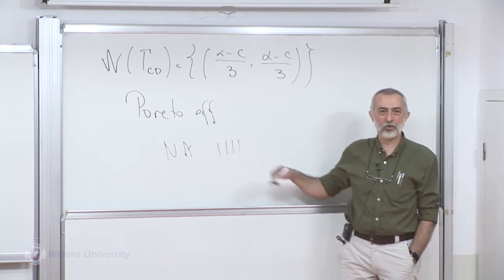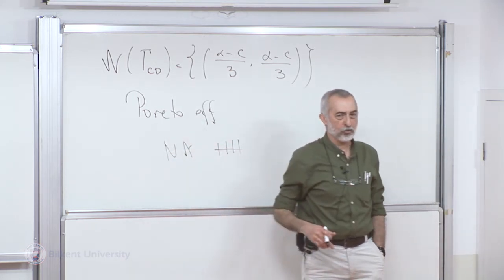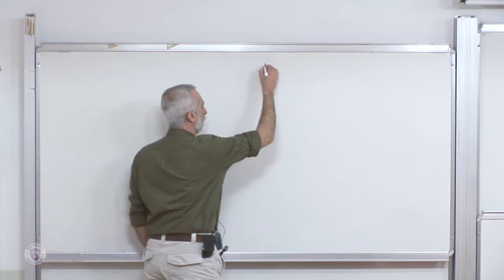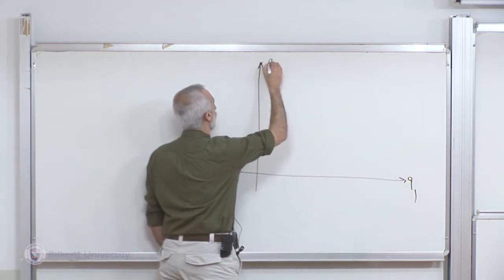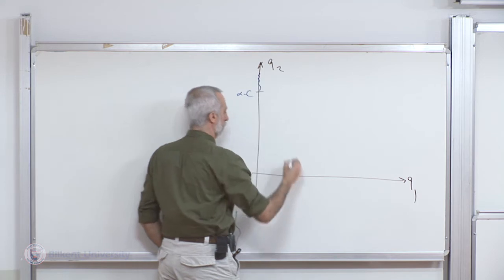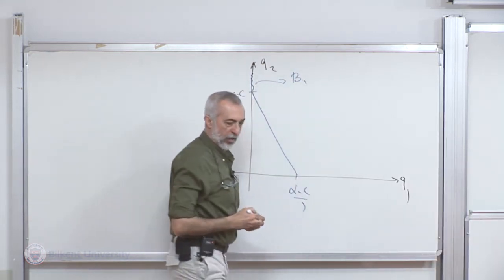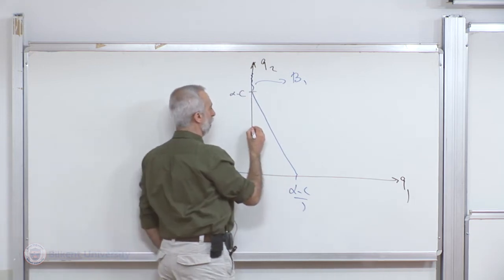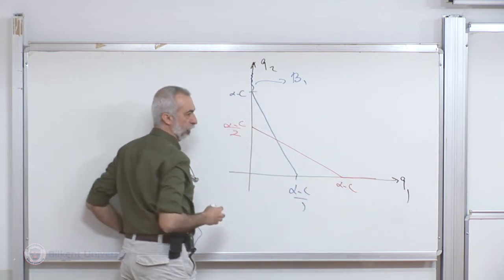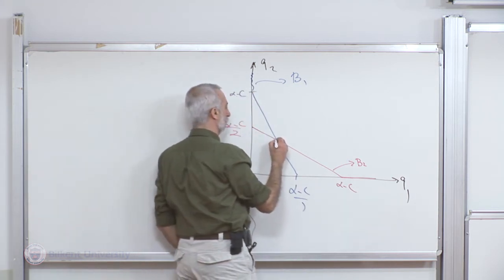The number has increased for 'not Pareto efficient.' When some of you claimed last lecture that it was Pareto efficient, the idea was: if it was not, by player one changing his strategy he would have to do better, which contradicted this point being a Nash equilibrium. Let me draw the picture. We have q1, q2, alpha minus c, alpha minus c over 2, the best response correspondences of firm 1 and firm 2, and this was our Nash solution.